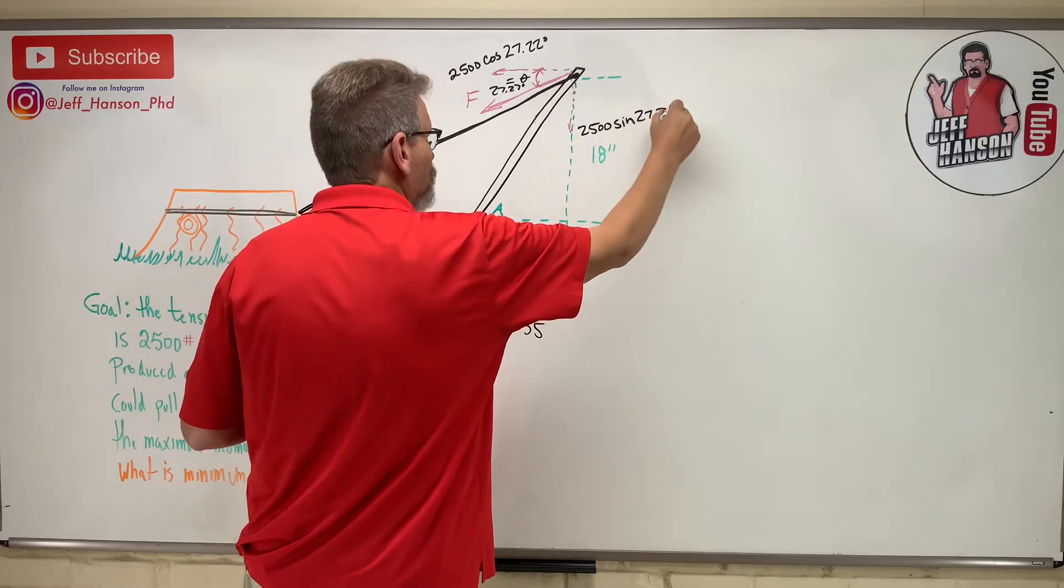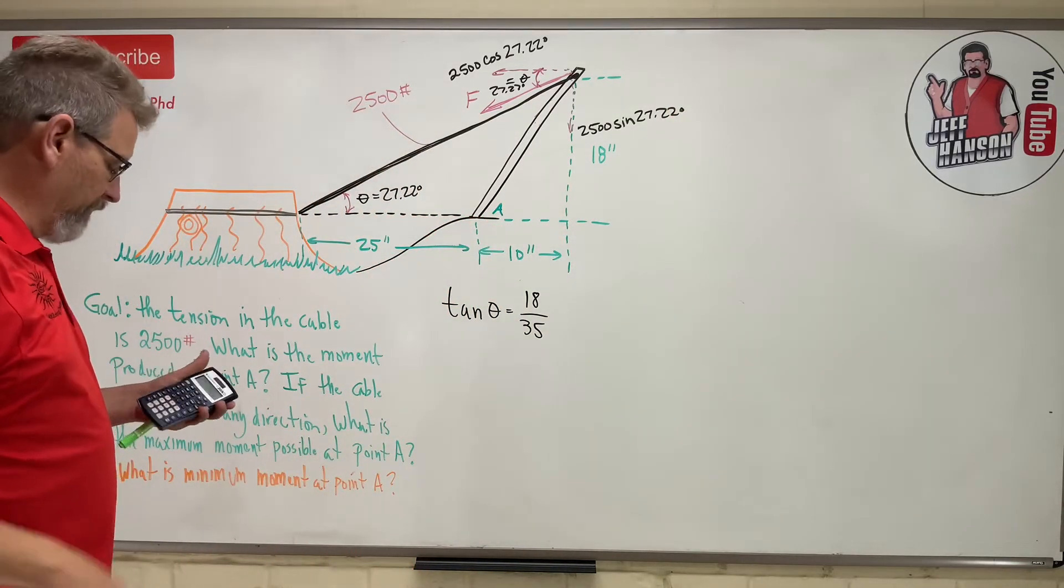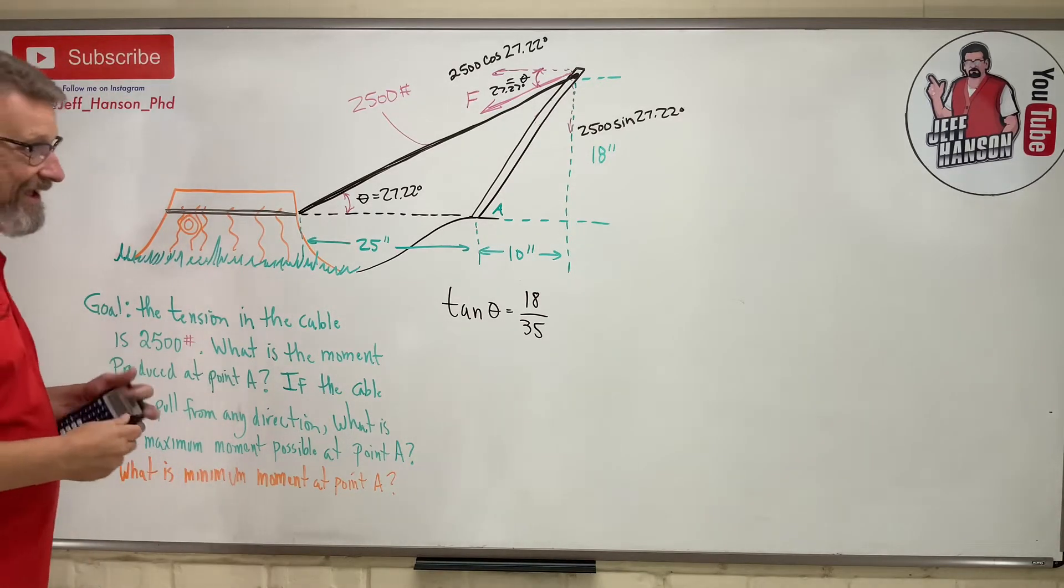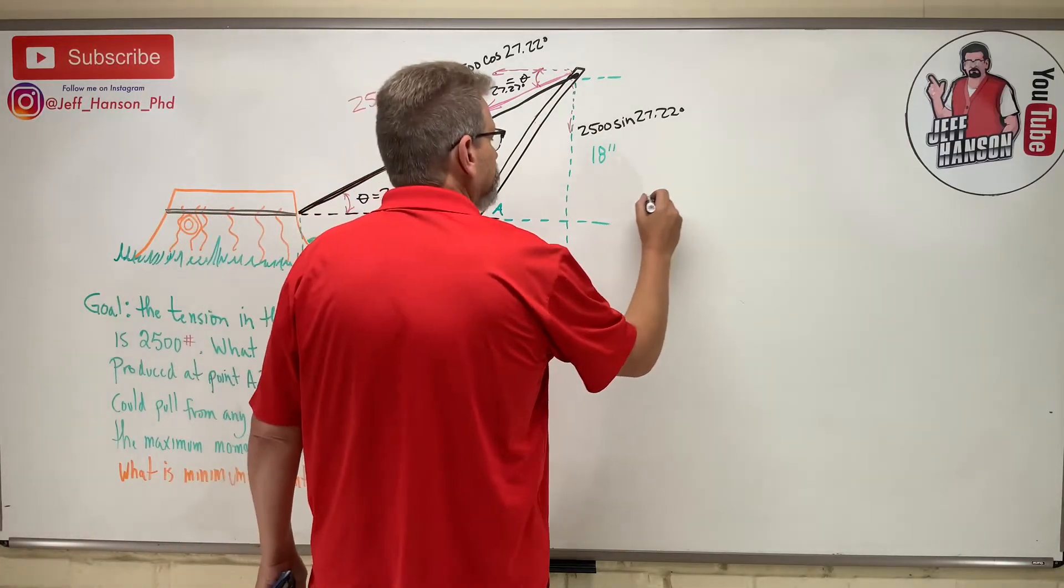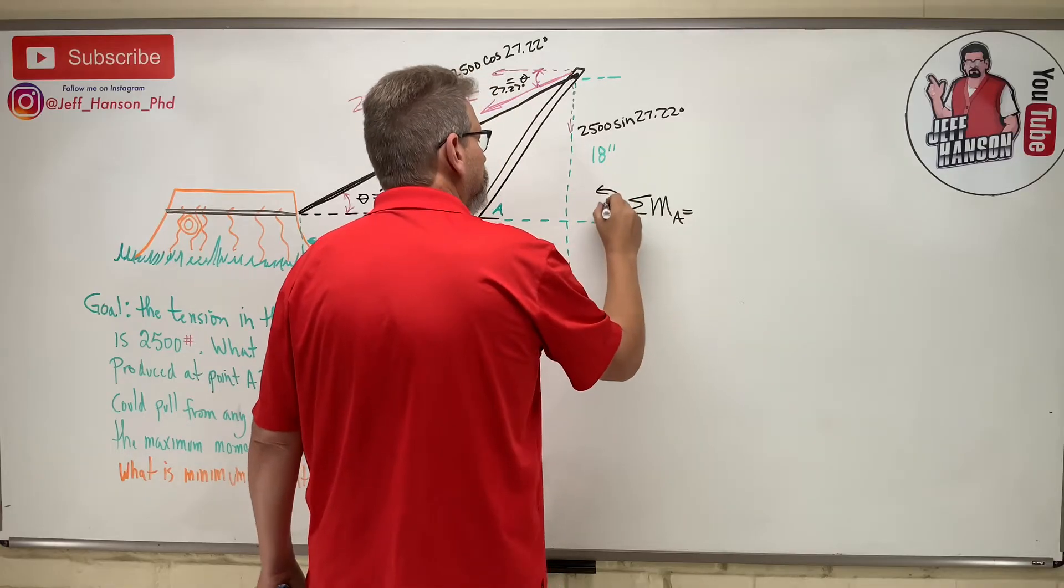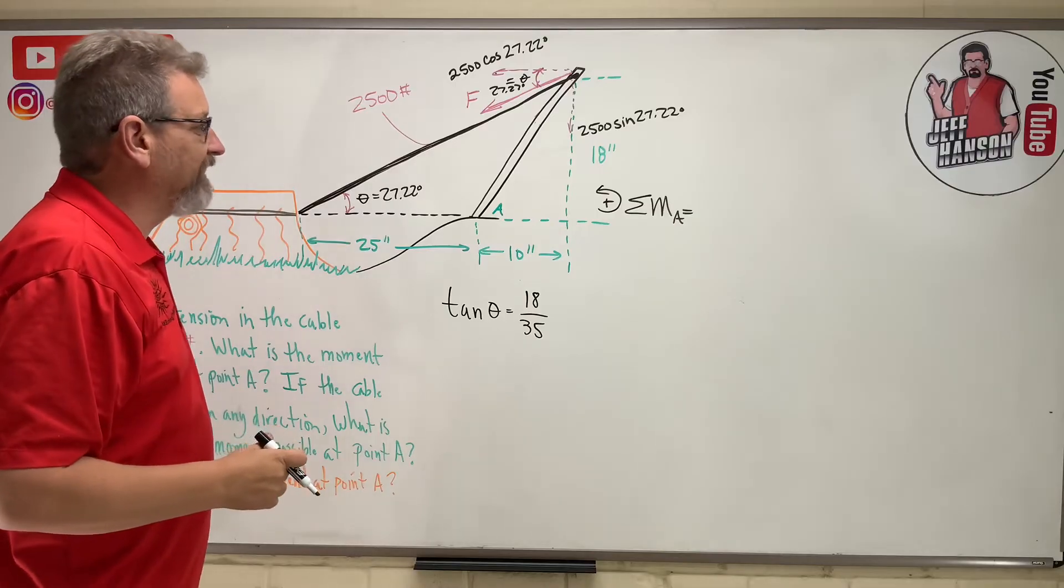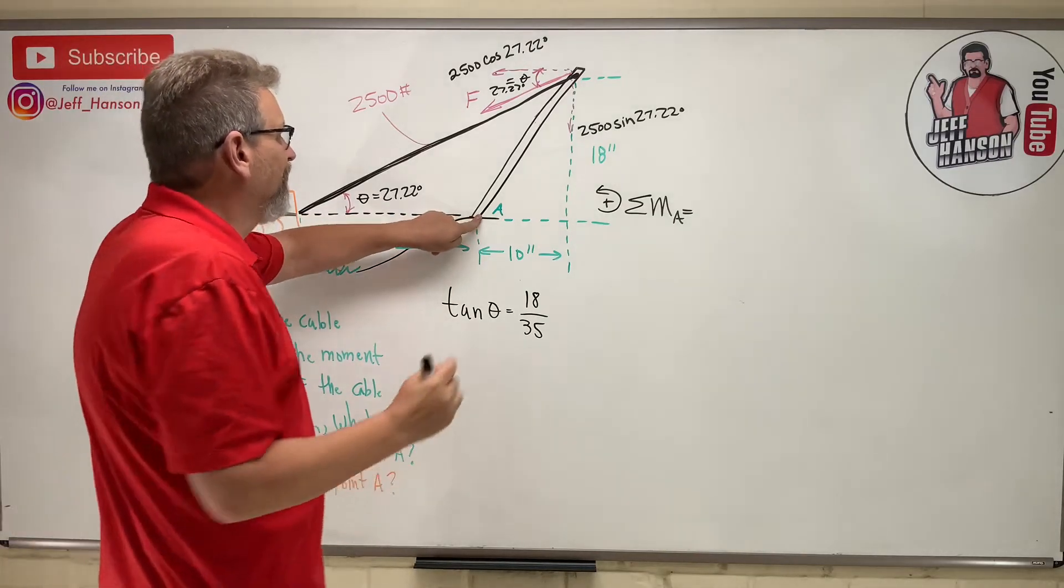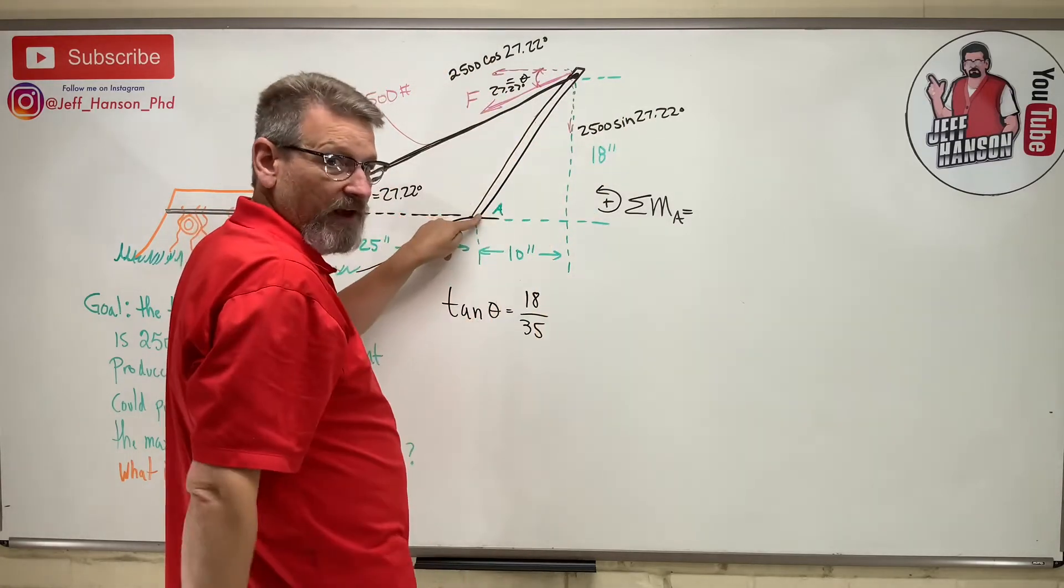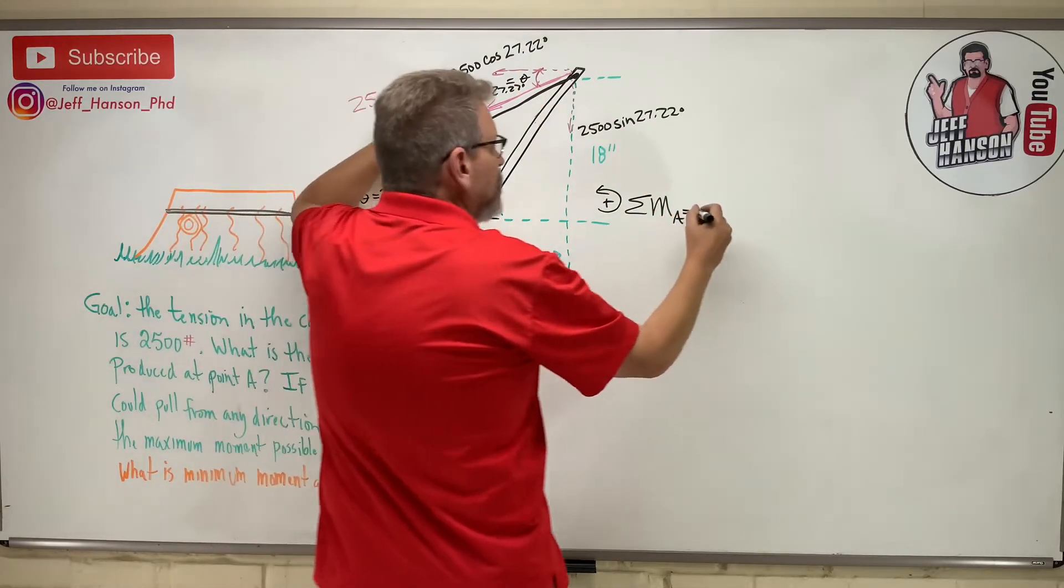All right, so let's see if we can do this. Let's see if we can write our moment equation and find the moment about point A. So the moment about point A is equal to, this being positive, right? There's our little symbol for positive, anything that's going to make us rotate counterclockwise. So I put my finger in A and I push with this top force up here, that makes me spin which way? Positive or negative? Positive. It makes me spin counterclockwise. So positive, 2500 cosine 27.22.